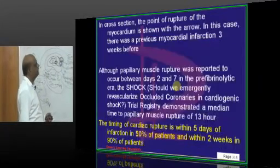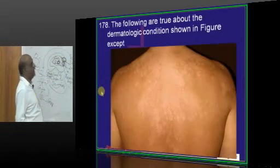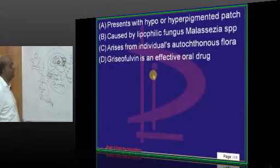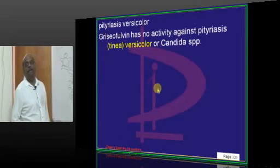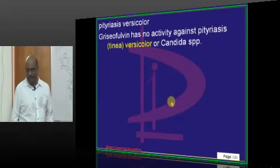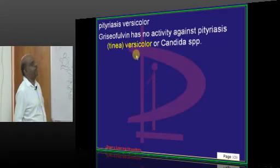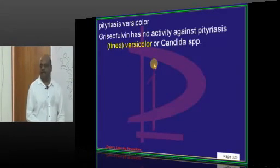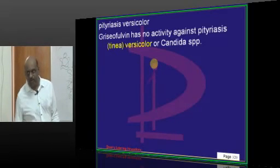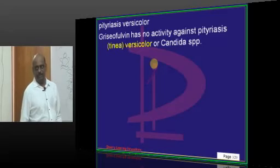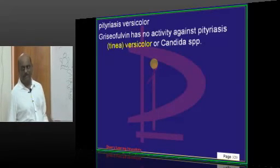Which dermatological condition is shown, and what drugs are used? Classically, when a patient has pityriasis versicolor with hypopigmented patches, any antifungal drug can be effective but not griseofulvin — it has no activity on pityriasis versicolor. Similarly, griseofulvin has no action on Candida; it has activity only on dermatophytes.